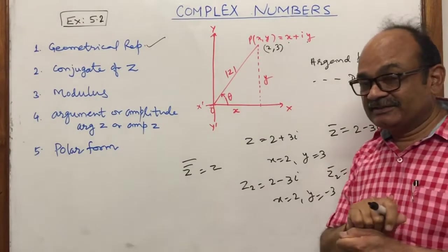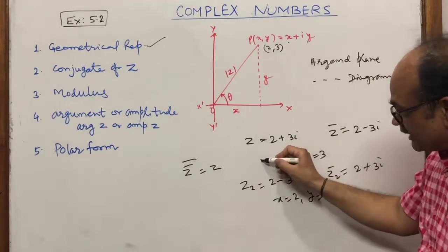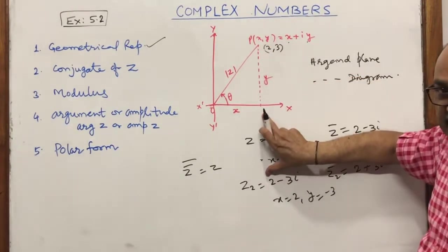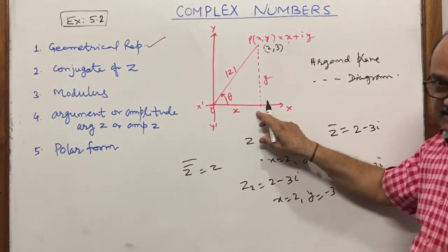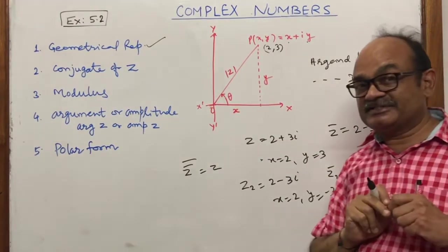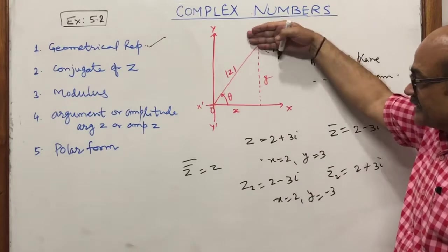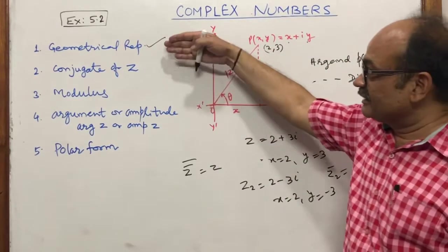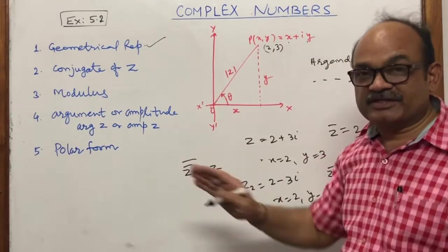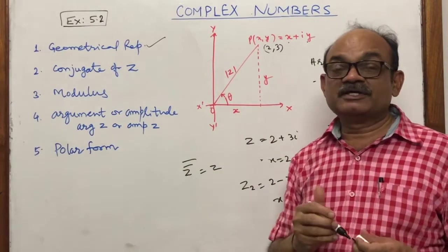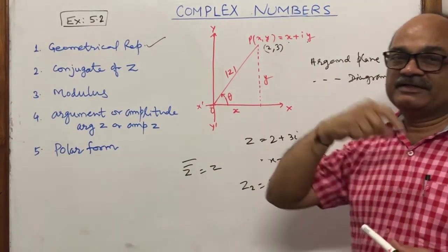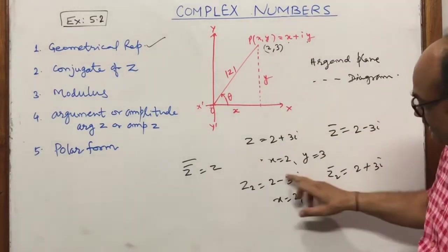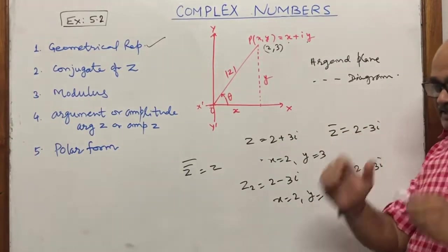For the complex number 2 plus 3 iota, its conjugate is 2 minus 3 iota — the y-coordinate changes sign but x remains the same. So if z is plotted in one quadrant, z-bar is its mirror image across the x-axis in the opposite quadrant.